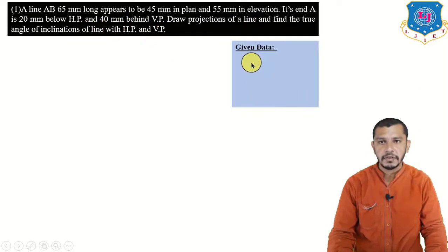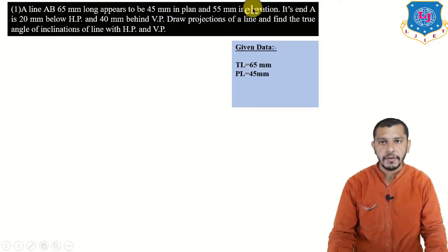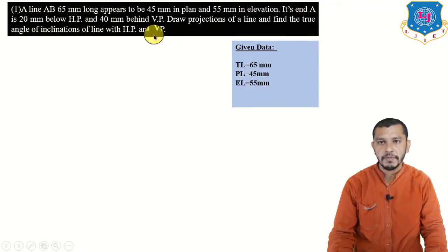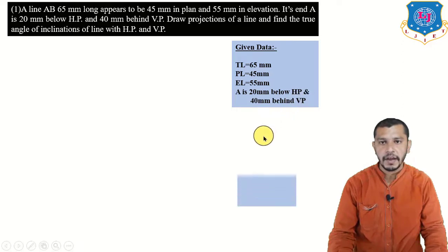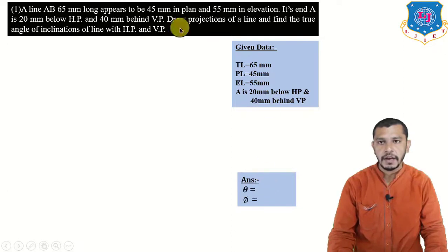The given data: true length is 65 mm, plan length is 45 mm, elevation length is 55 mm, end A is 20 mm below HP and 40 mm behind VP. End A is in the third quadrant, and we have to find out the true angle of inclination of the line with HP and VP, that is theta and phi.